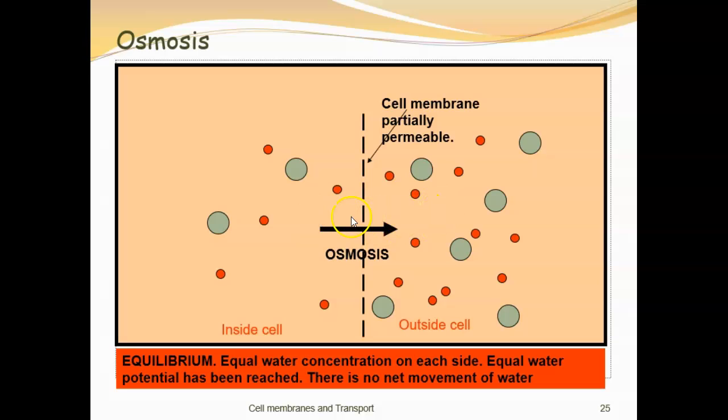Now you actually have more water on one side, but because of the ratio of water to sugar or water to solute, it has reached equilibrium. Water continues to move back and forth, there's just no net movement.